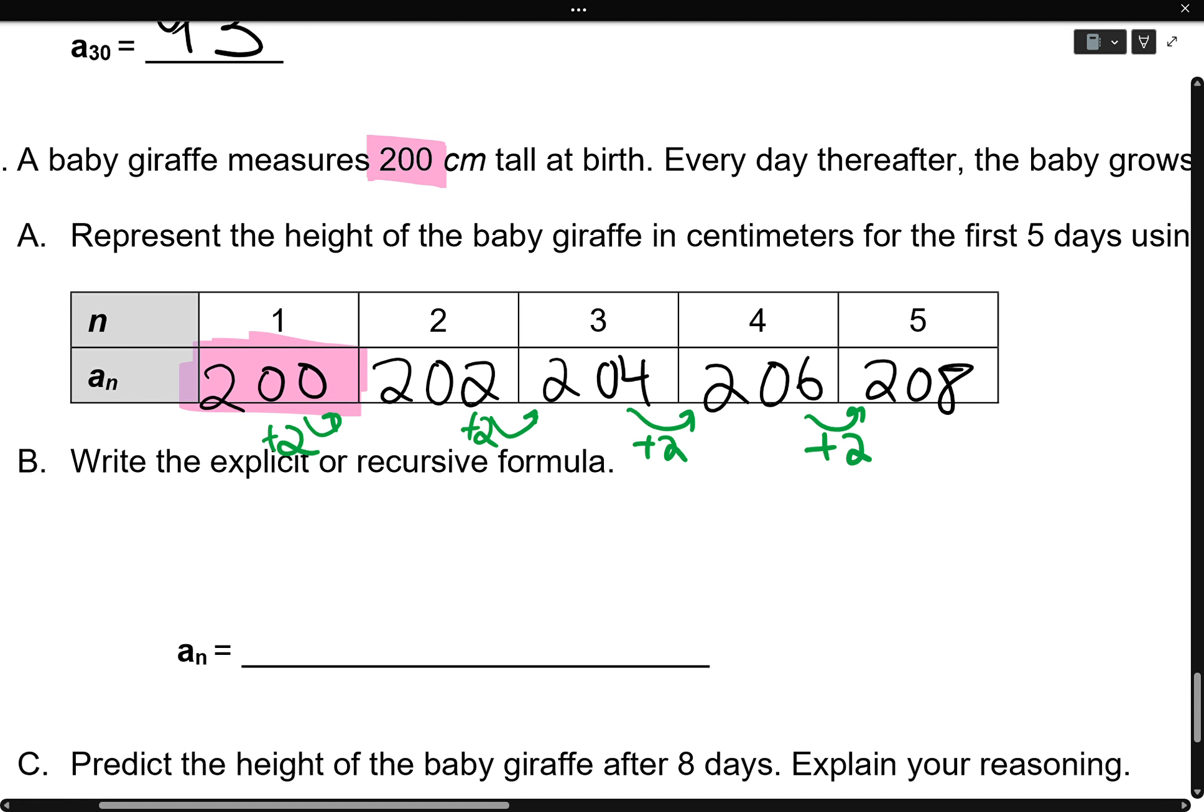Letter B asks you to write the explicit or recursive formula. I prefer the explicit. But I'll do both. Here's the recursive. And then in this part, I'm going to write the explicit. So the recursive formula only requires our common difference, which is two. Now, our explicit formula starts off with the first term, which is 200. And then our common difference plus two and minus one.